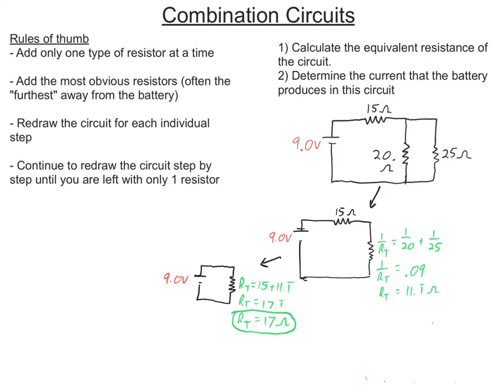Now number two, determine the current that the battery produces. To actually be able to solve for what current comes out of this battery, that's the exact same current over here as well. It becomes very easy whenever you add your circuit down to a single resistor. You get the equivalent resistance adding down to an equivalent circuit, one resistor. Now I can just use Ohm's law, V equals IR.